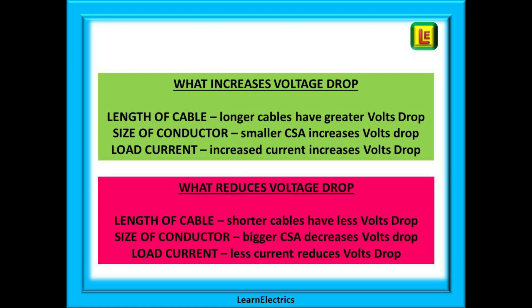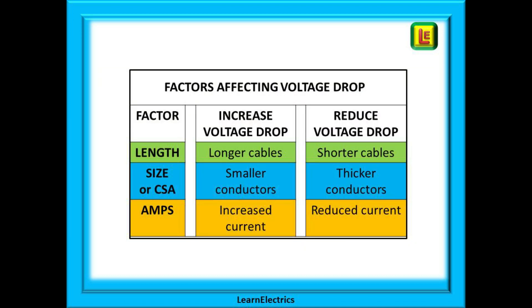Conversely, what will make the situation better: shorter cable runs will have less volts drop, bigger cable sizes will reduce the volts drop, and reducing the load current will also reduce the voltage drop in the cable. This table shows these three factors more clearly. The three influence factors — length, size and current — are in the left-most column. The middle column shows what changes might increase the voltage drop, and the right-most column shows how changes will cause a reduction in the voltage drop and hence make cable conditions better.